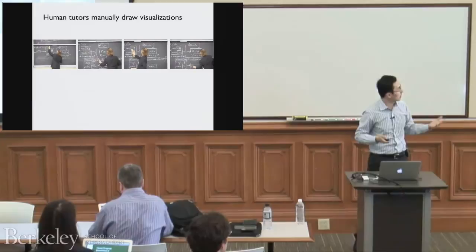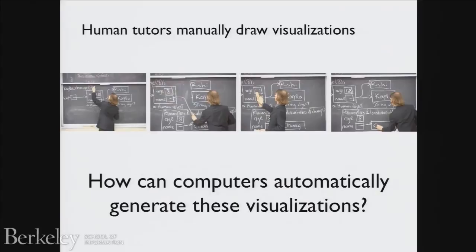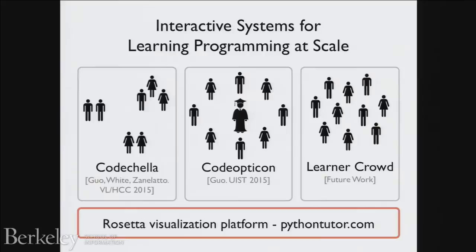Human tutors manually draw visualizations all the time — this is from an old Berkeley lecture video. Humans obviously don't scale, so the question is: how do we scale this up? How can computers automatically generate these kinds of visualizations? To investigate this, I built a visualization platform called Rosetta.